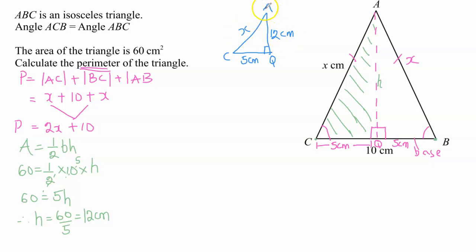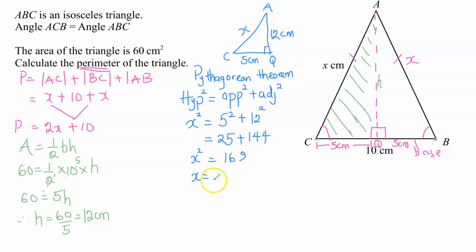This is going to be very easy for us to obtain the value of x because we are going to use the Pythagorean theorem. Clearly, the side AC is the hypotenuse because it's the side facing the right angle. From Pythagoras' theorem, hypotenuse squared equals opposite squared plus adjacent squared. So x squared equals 5 squared plus 12 squared. 5 squared is 25, 12 squared is 144. 25 plus 144 is 169. If x squared is 169, taking the square root of both sides, x is the root of 169, which is 13.